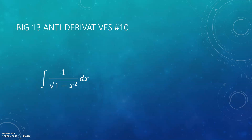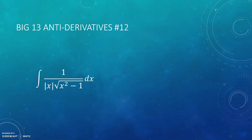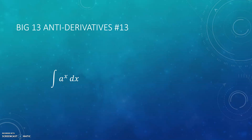Now we're on to the inverse trig derivatives. The good news is you don't have to worry about the 'co-' versions with inverse trig, because the plus C kind of takes care of that for you. This one is sine inverse of x plus C. This one, I hope you recognize, is tangent inverse of x plus C. And this weird ugly one is secant inverse of x plus C. That's the big 12, so there must be one more — the big 13. This is the one most people forget: going forward, the derivative of a to the x is a to the x times natural log of a, so working backwards, the antiderivative is a to the x divided by natural log of a, plus C.